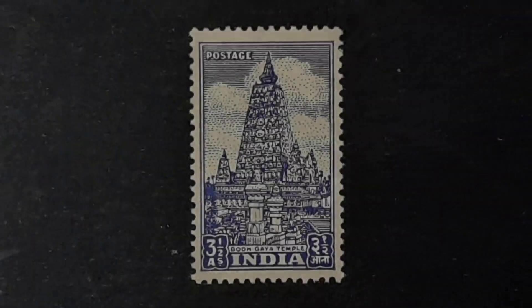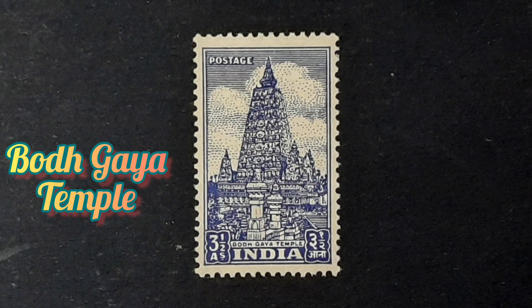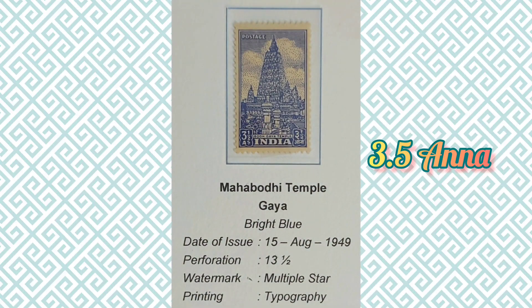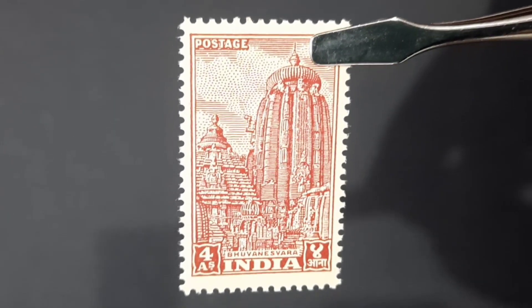The next stamp is the three and a half anna stamp. The image depicted here is the Mahabodhi Temple at Bodh Gaya, an important place in the life of Lord Buddha where he attained enlightenment. The present structure was built during the 5th to 6th century AD. The philatelic information related to this stamp can be found here.